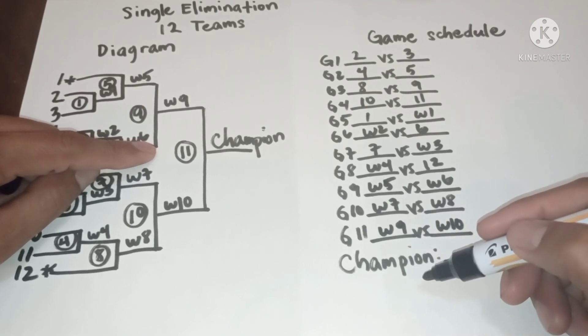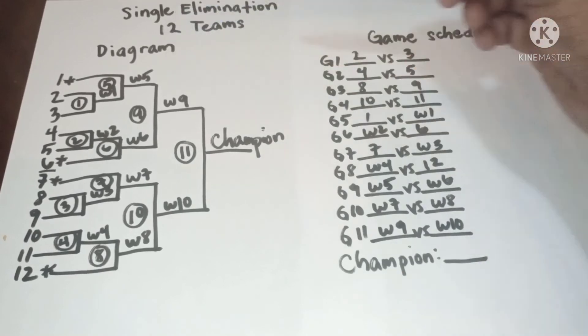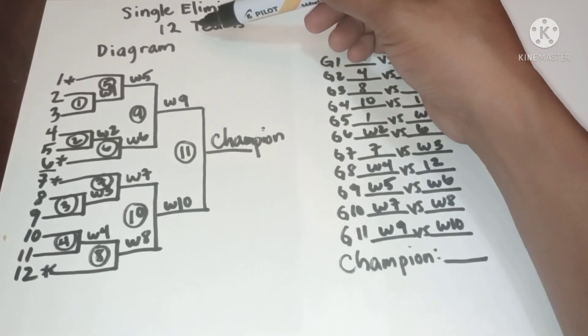Then champion. This is the diagram and game schedule for 12 teams or 12 number of entries.